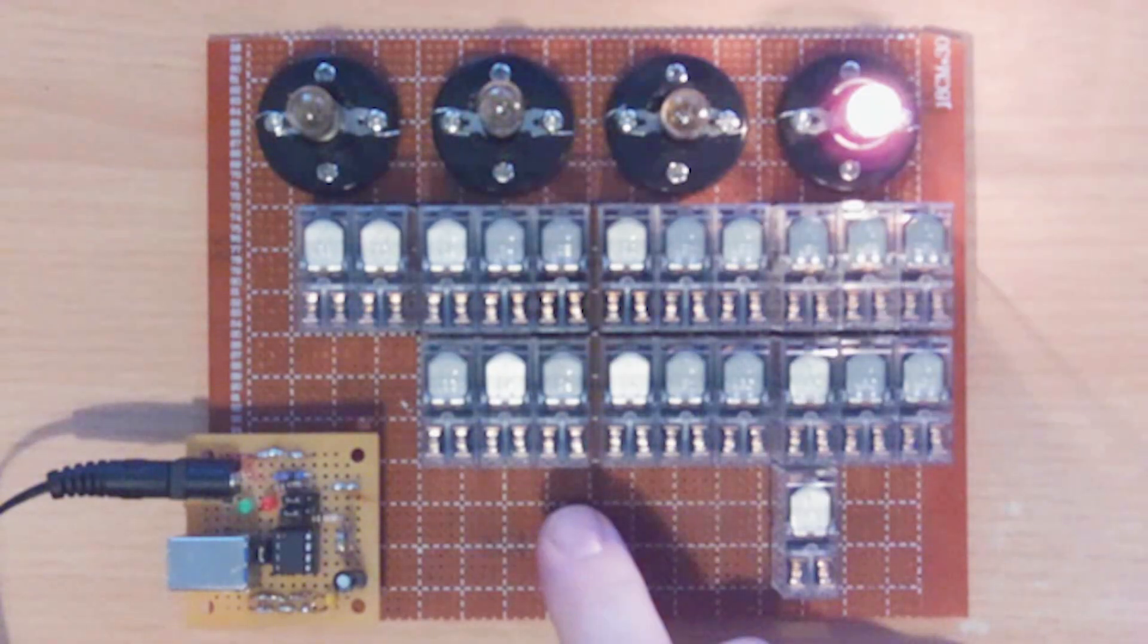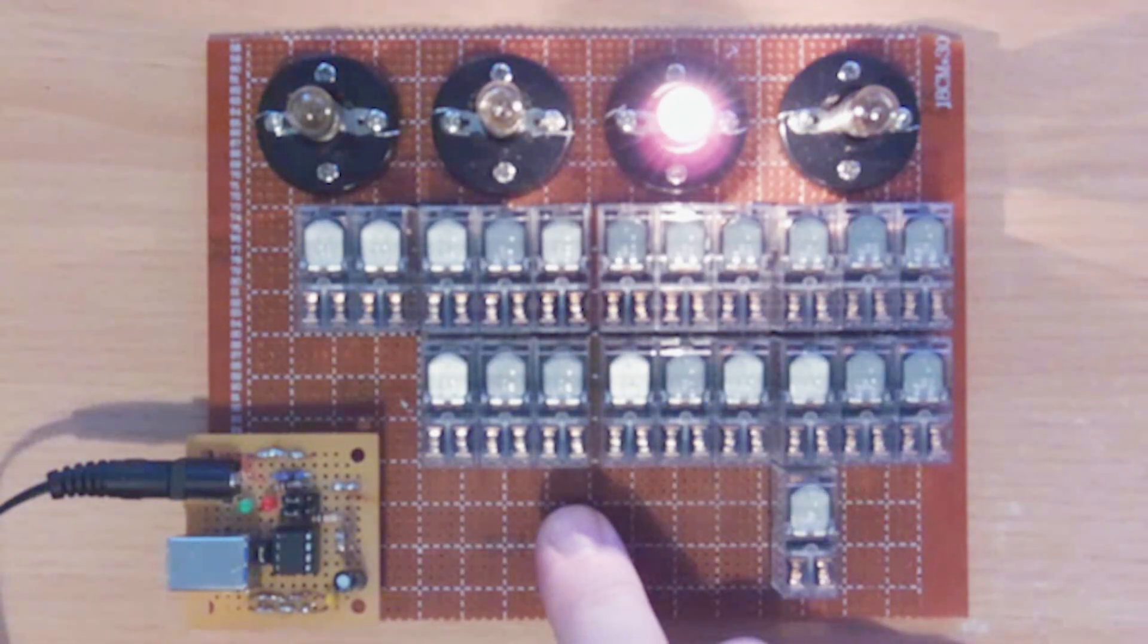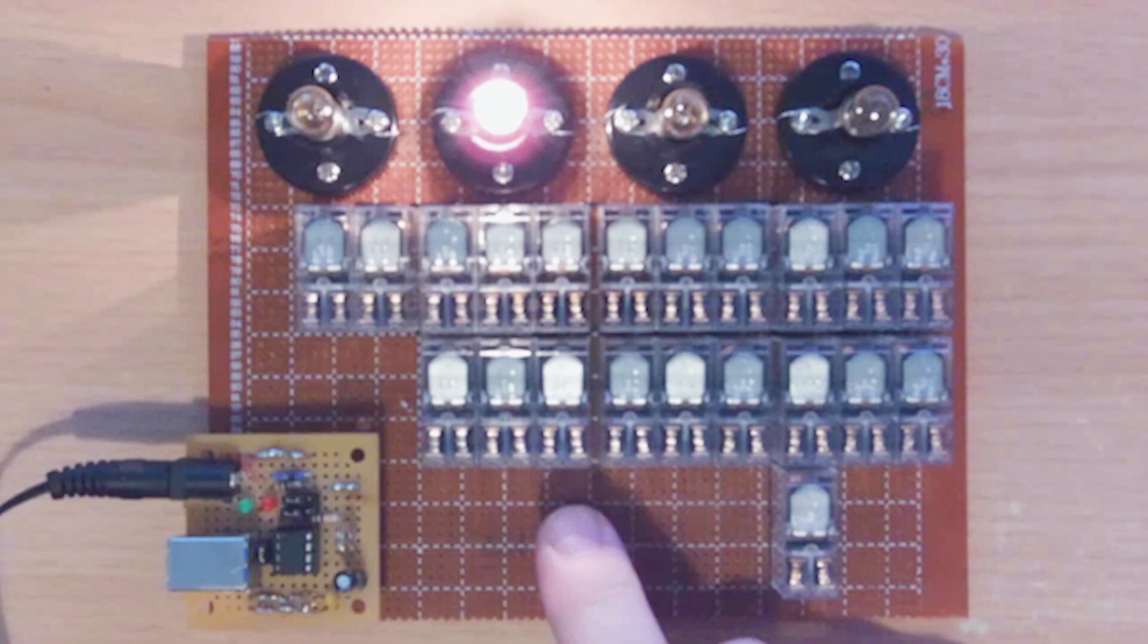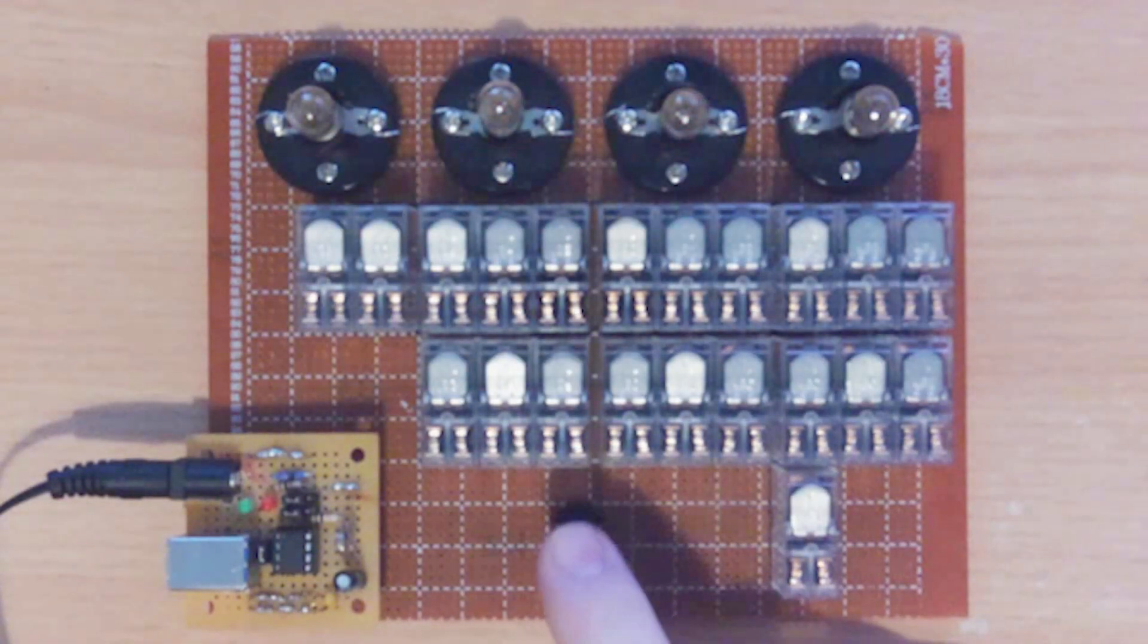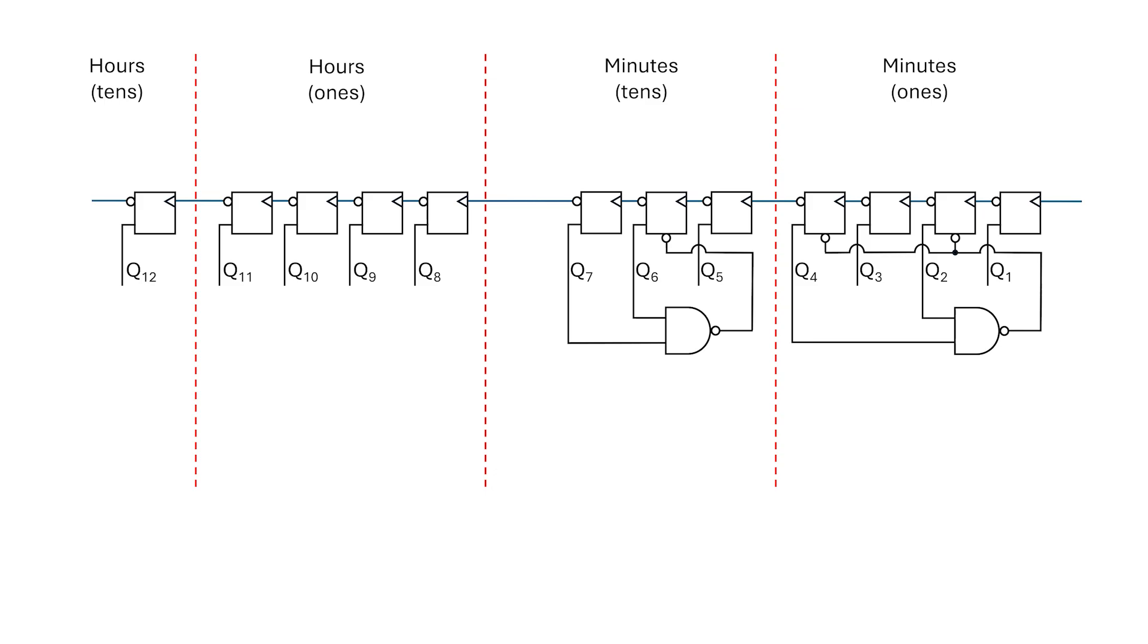Very good. But now let's look at the ones of minutes digit, where I want to roll over from 9 to 0.